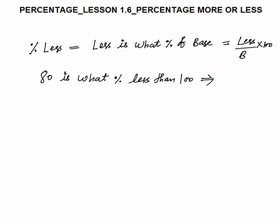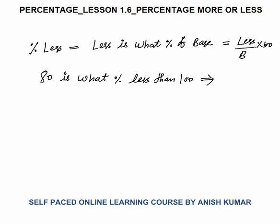Next is percentage less. Percentage less is similar to percentage more. Percentage less is: less is what percent of base, that is less by base into 100. For example, 80 is what percent less than 100. 80 is 20 less than 100. The base is 100 because we are comparing our number 80 with 100. Whatever number follows 'less than' is considered the base.